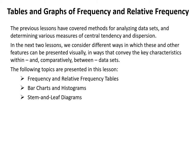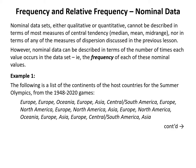We start by looking at nominal data sets, which whether qualitative or quantitative cannot be described in terms of most measures of central tendency, nor in terms of any measures of dispersion discussed in the previous lessons. However, nominal data can be described in terms of the number of times each value occurs in the data set — in other words, the frequency of each nominal value.